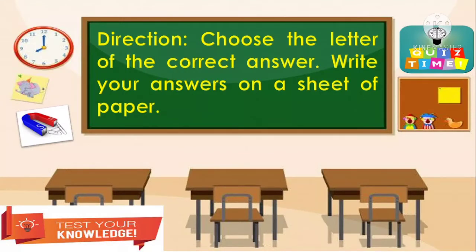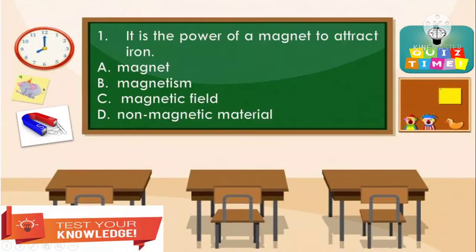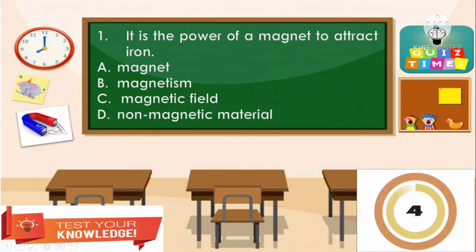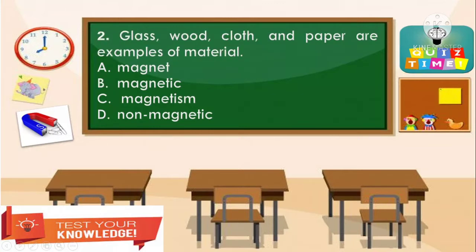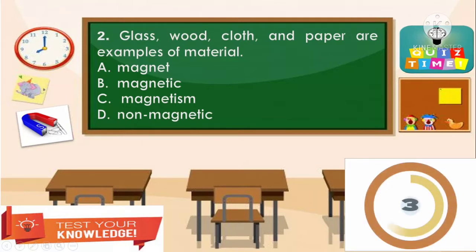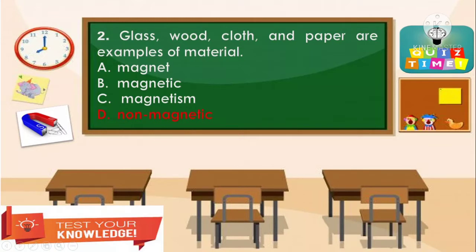I know you already have many ideas about magnets. This time, let us first check if we can answer these questions. You are given 5 seconds for each question. Ready? Direction: Choose the letter of the correct answer. Write your answer on a sheet of paper. Item number 1: It is the power of a magnet to attract iron. A. Magnet, B. Magnetism, C. Magnetic field, D. Non-magnetic material. The correct answer is letter B — Magnetism. Good job, kids!